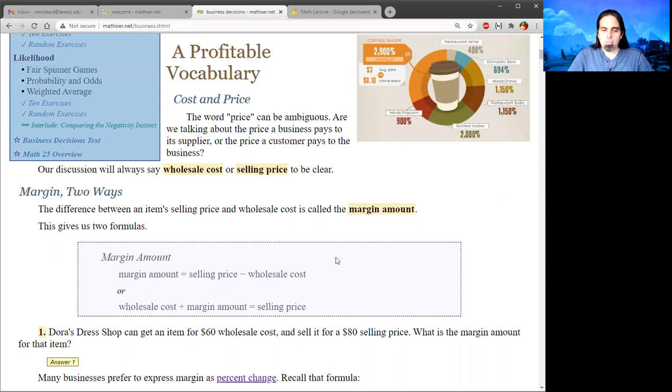So if we want to write formulas, because we're a math class, we like formulas. The margin amount is how much the customer pays minus what the business paid to the supplier. If we rearrange it, what the business paid to the supplier plus this extra margin amount, that's what the customer has to pay.